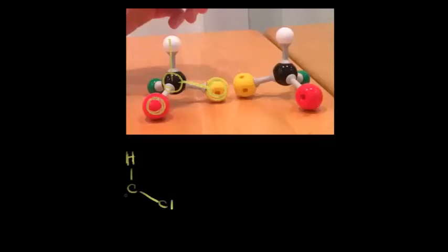Bromine is coming out at us in space, so we use a wedge to show the bromine coming out at us. Fluorine is going away from us in space, so we show that with a dash — the fluorine is going away.